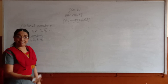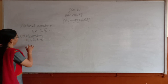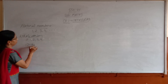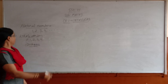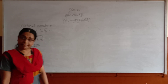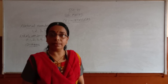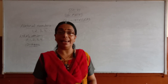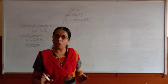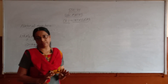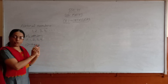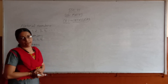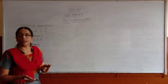Then what are integers? The whole numbers along with their negatives are called integers. So the whole numbers are there and also their negative numbers are there — they are called integers.